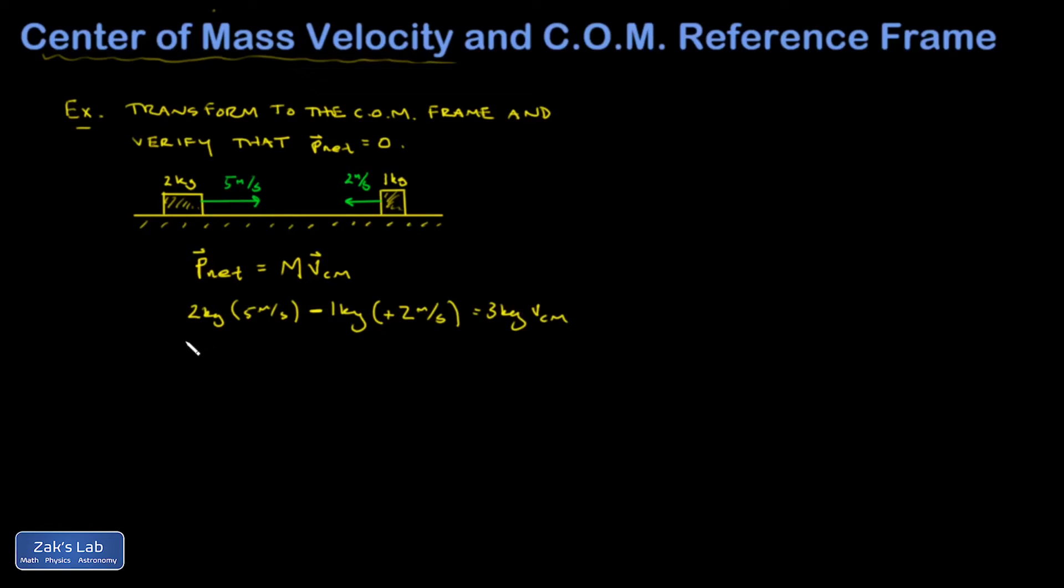And I'm left with the center of mass velocity. So crunching the numbers real quick. To three sig figs, I get that the center of mass is moving to the right at 2.67 meters per second.